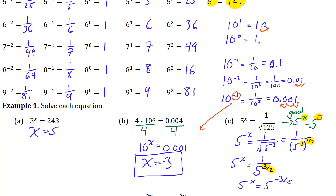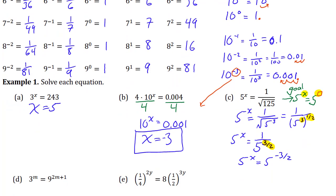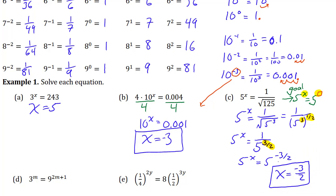So now at this stage, you have 5 to the power x and 5 to the power negative 3 over 2. What is the value of x that makes these the same? That's what you're trying to do when you solve an equation. In this case, hopefully it's pretty clear that x is negative 3 over 2. That will make both sides of this equation 5 to the power negative 3 over 2.